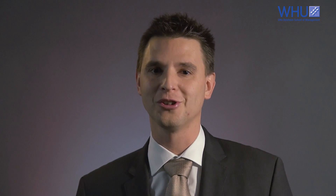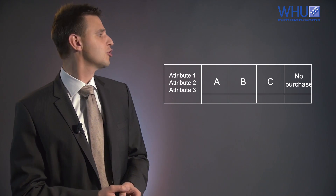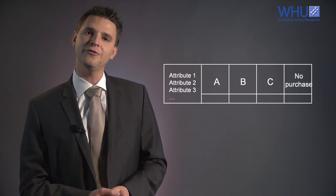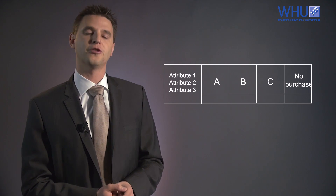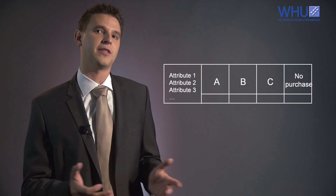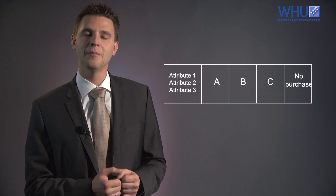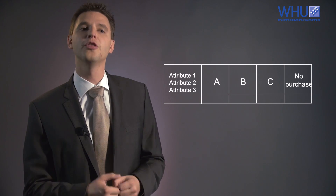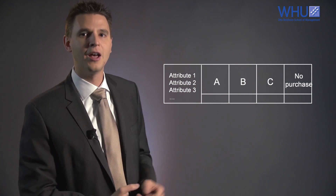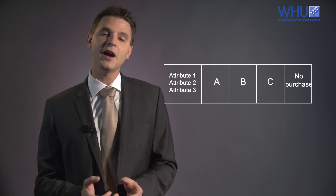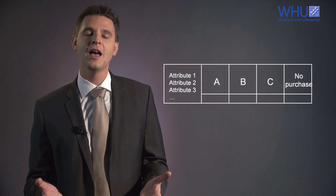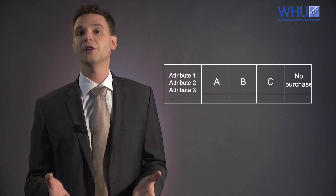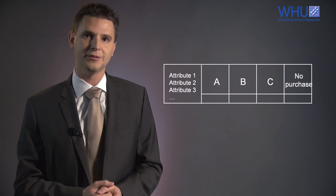Let's get started with choice-based conjoint. I'm using the term choice-based conjoint if the choice set contains product alternatives specified by the attributes and the levels, but also the no purchase option. The no purchase option provides a realistic experimental setting, and it provides a clear reference point for the respondent.